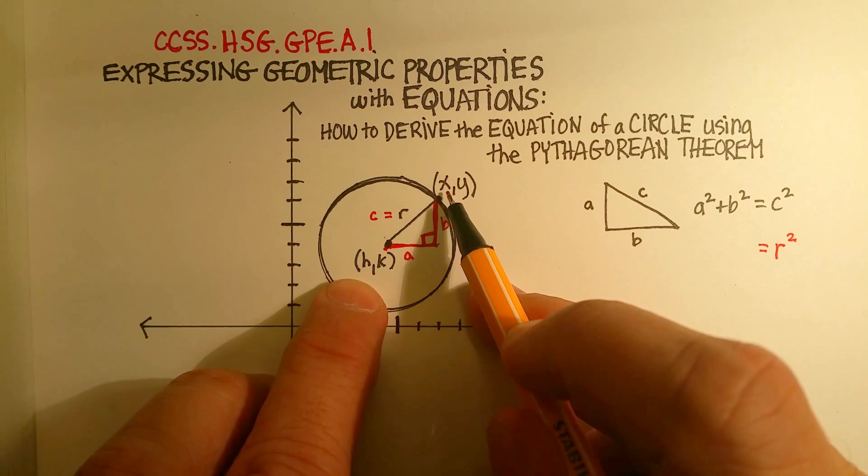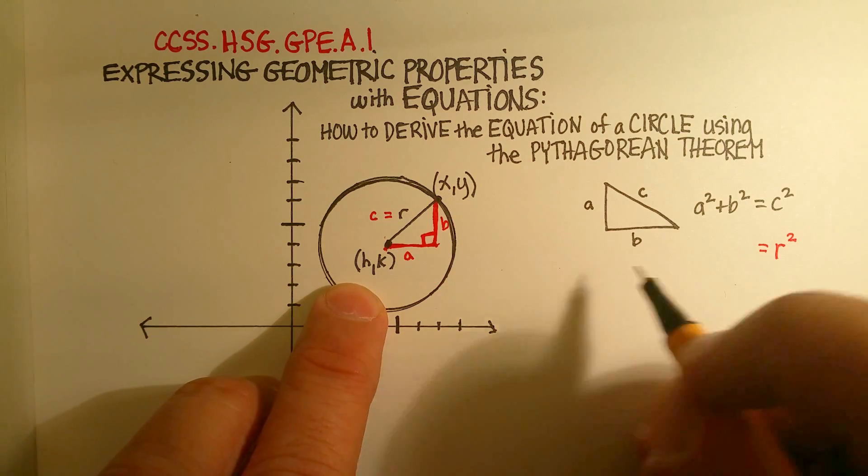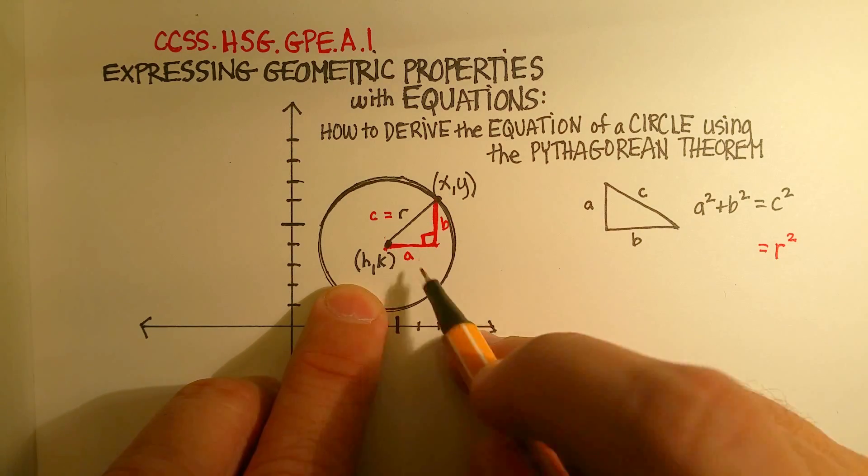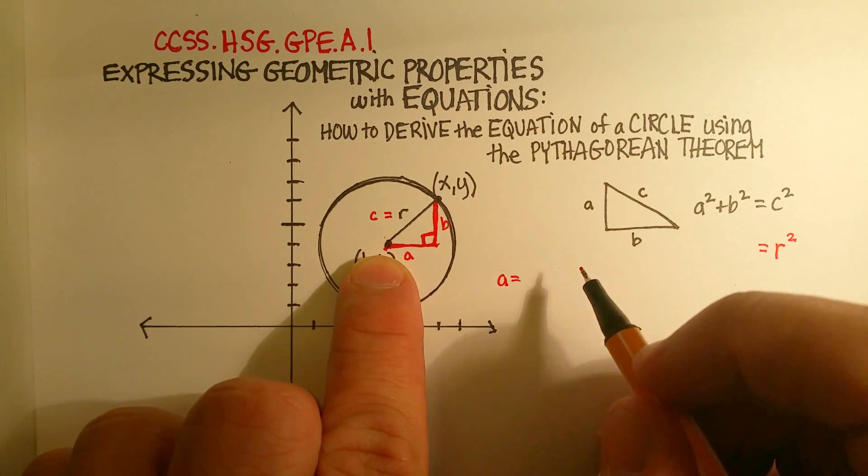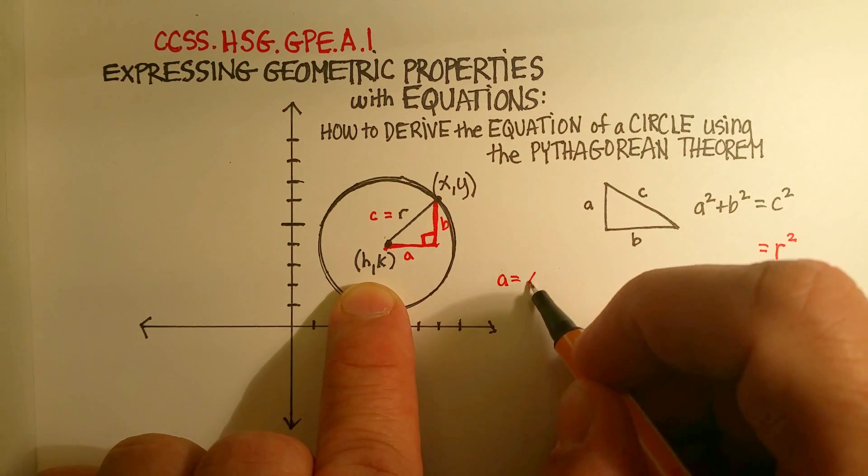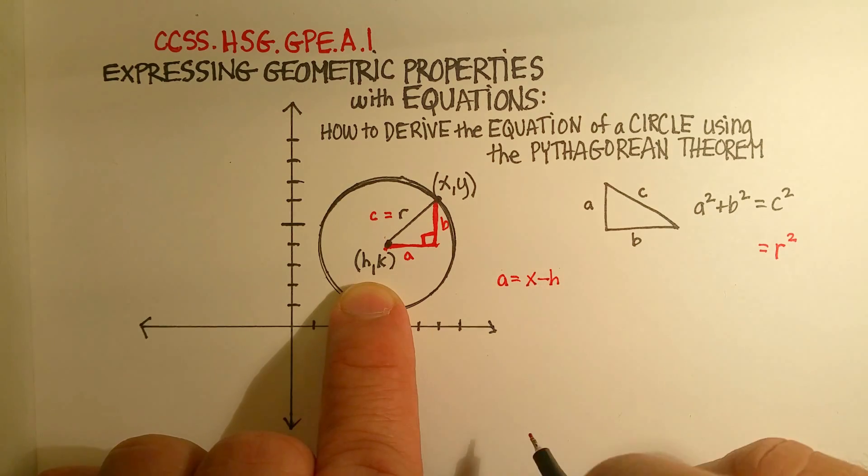So this x value minus this x value. We're going to say that a equals x minus h.